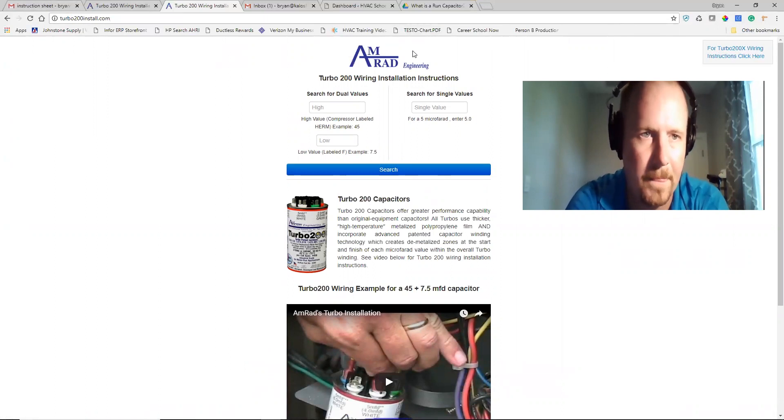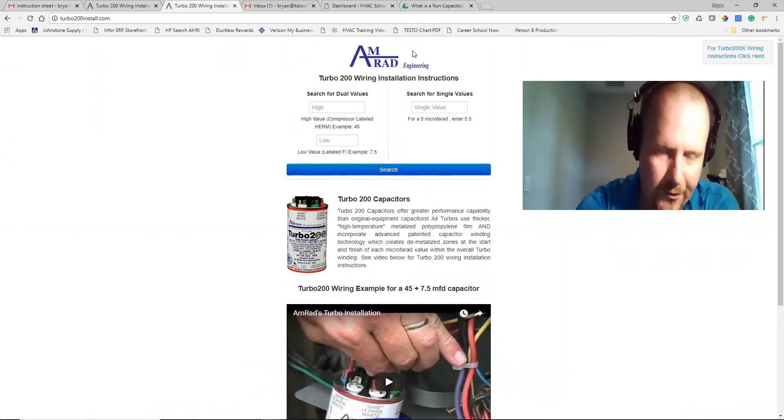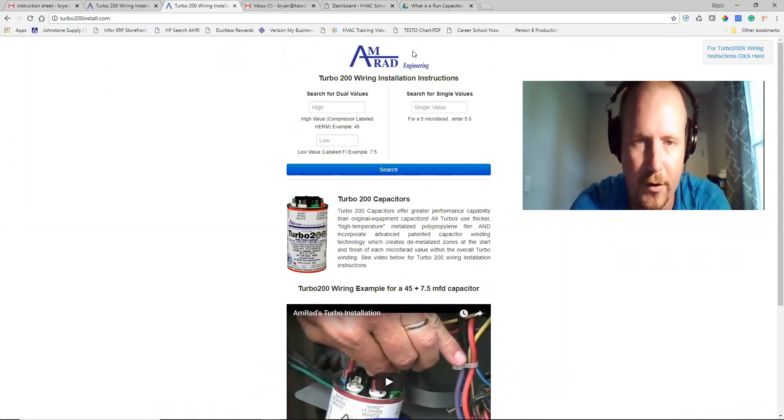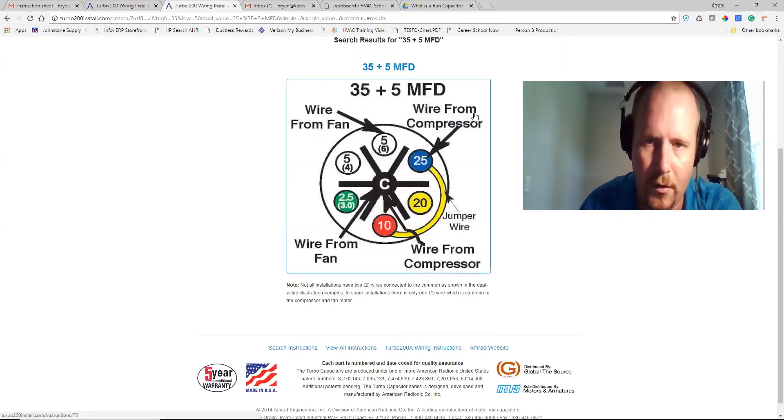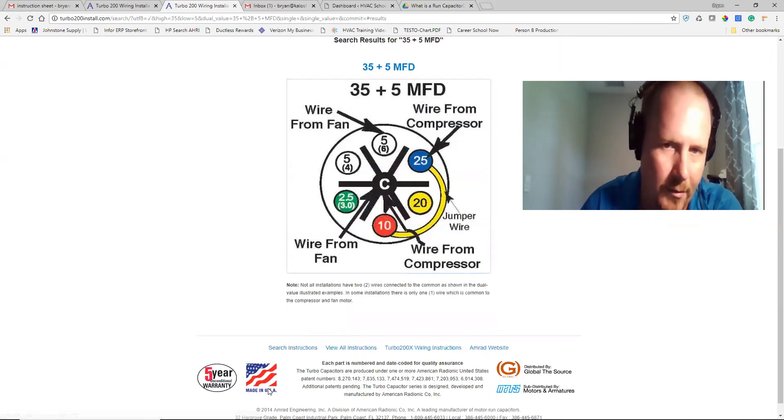All right, so I want to show you this web app. You can use it on your mobile phone, on a computer, whatever you want. Very easy. It's called turbo200install.com and it's just a way for you to find proper wiring instructions for the turbo 200 line. Either the turbo 200 or if you go to turbo200xinstall.com, it will give you the installation wiring instructions for the turbo 200x. All right, so if you want to find say a 35 by 5, that'd be a common one. 35, 5, hit search. There you go. Wire from your compressor. This one goes to Herm. These are your commons. They go back to actually the run side of your contactor. And then your wire from your fan. This would traditionally be fan. This would traditionally be Herm and then this is common. That's how you'd wire it up. And you put your jumper in between 10 and 25 and that makes it 35.